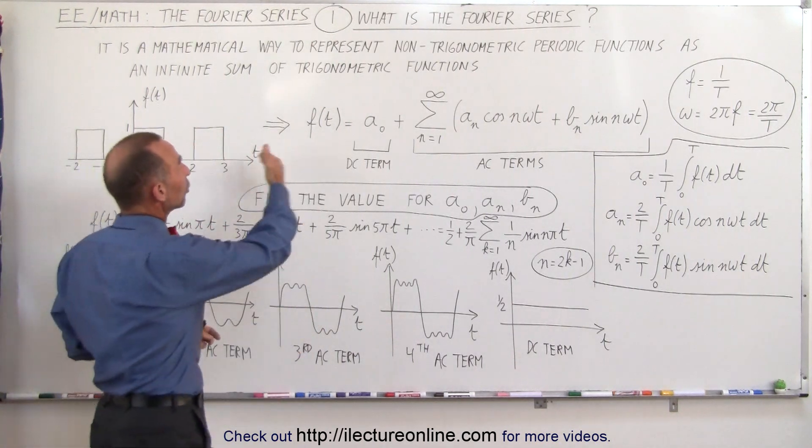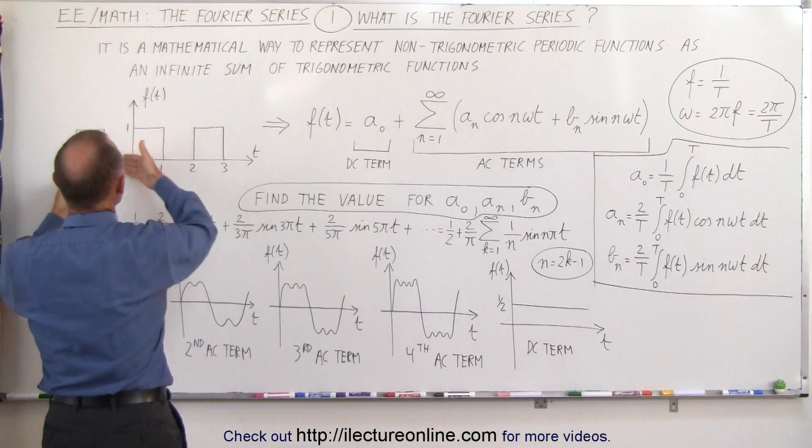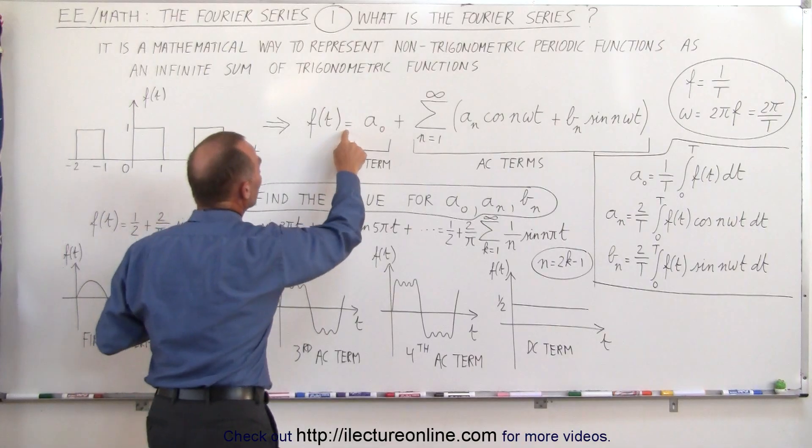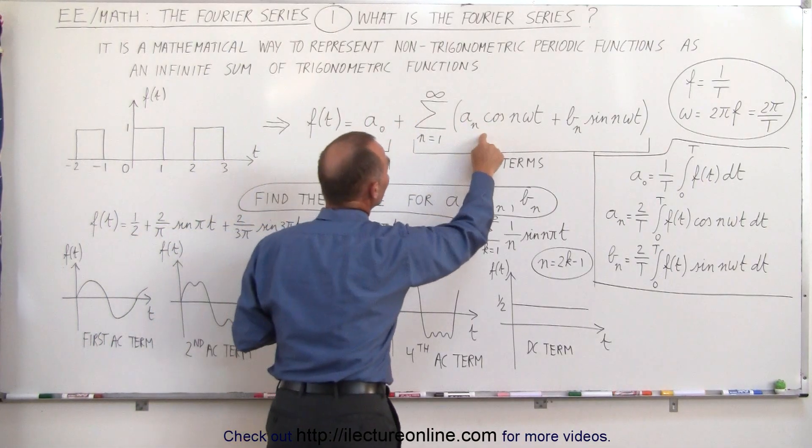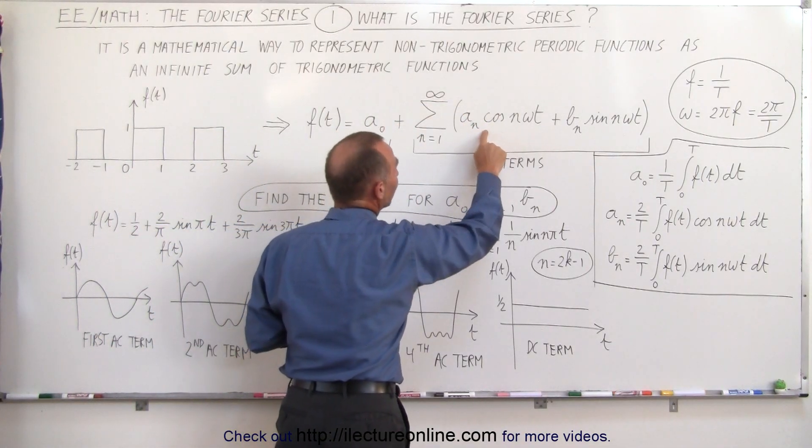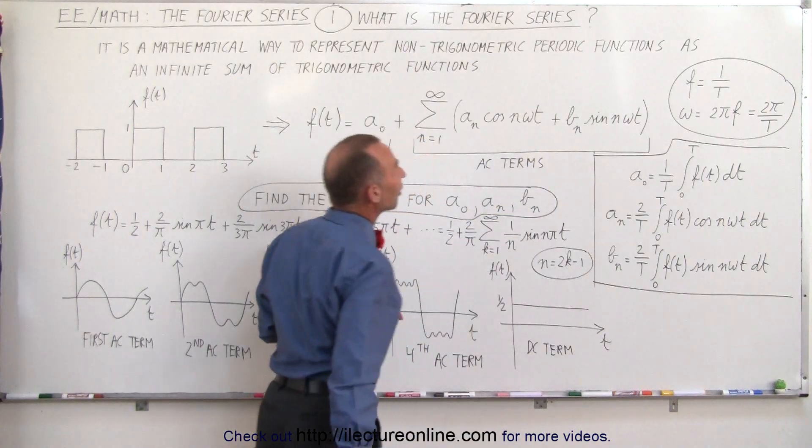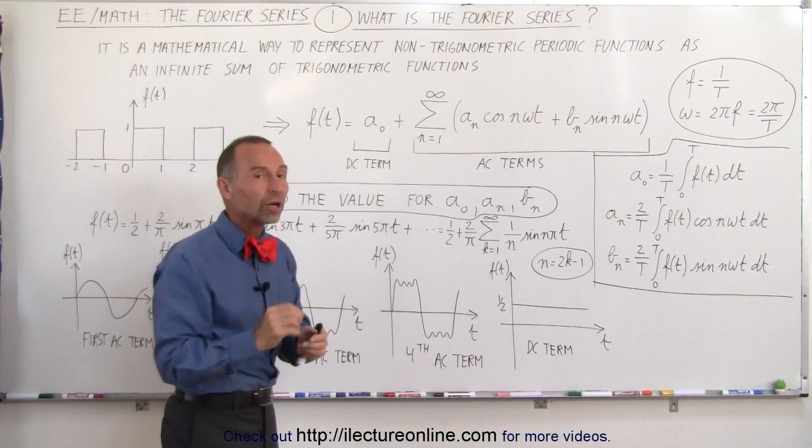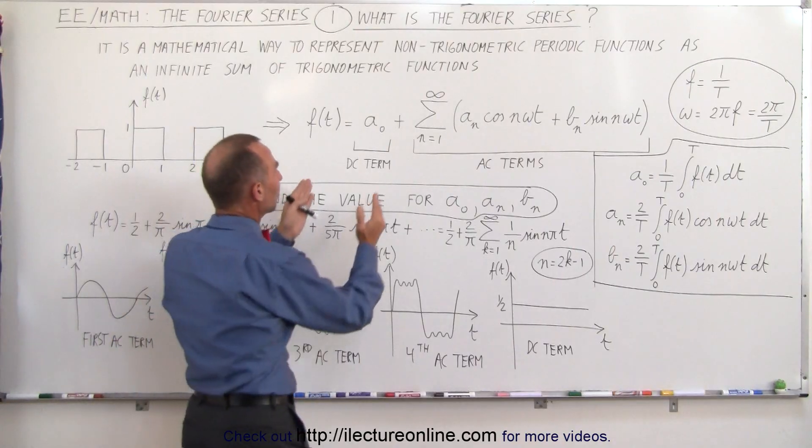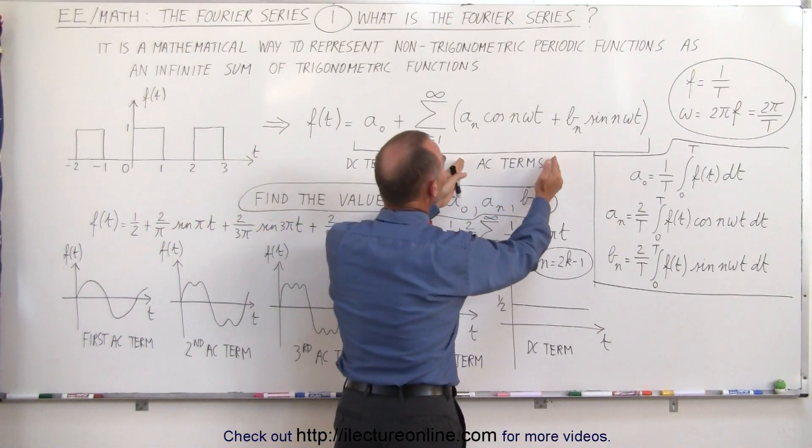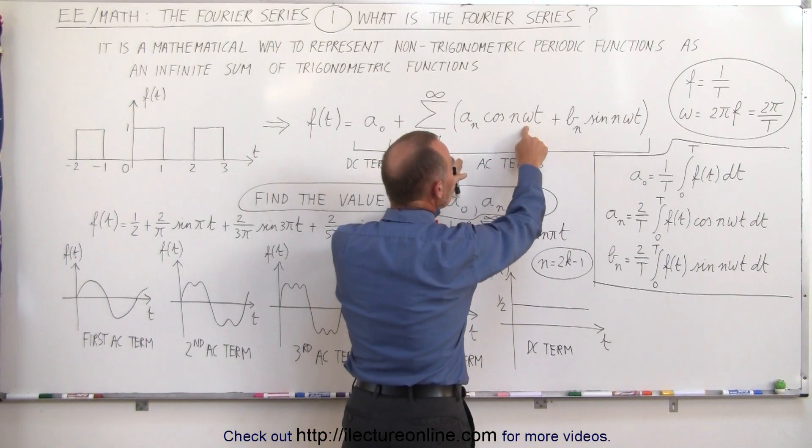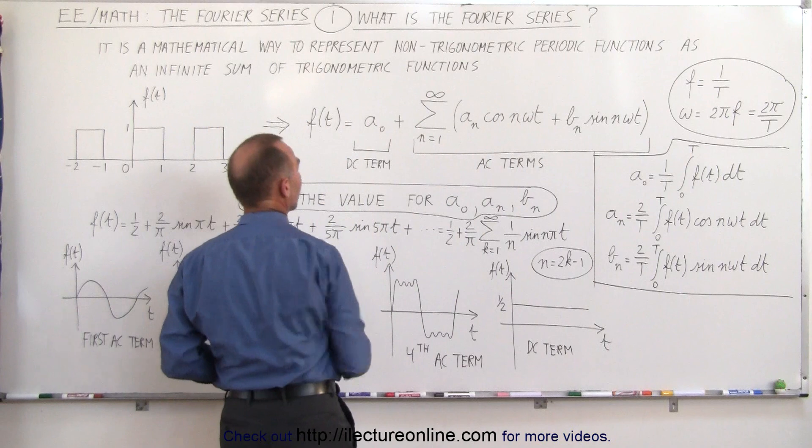Here's the general equation. Here f of t simply represents this square wave function and we can then rewrite it as an infinite sum of either a cosine or a sine function added to a DC term or constant term. This represents the DC term, this represents the AC terms which are dependent on the frequency, the radial frequency of the periodic function.